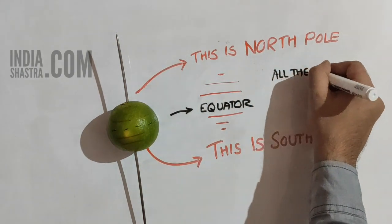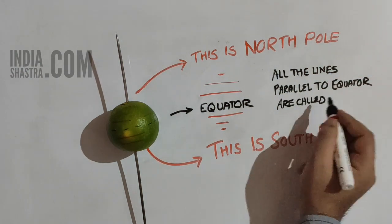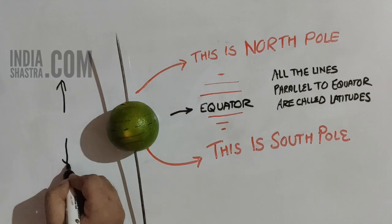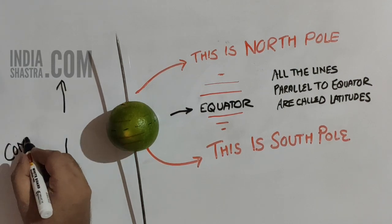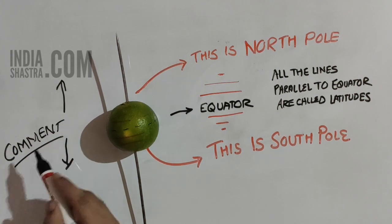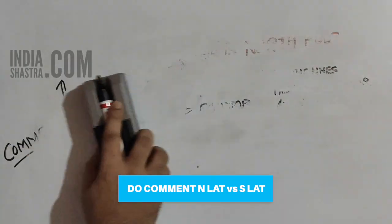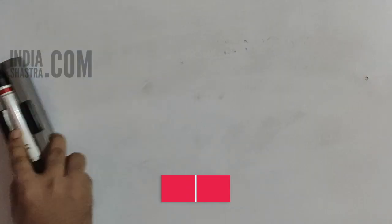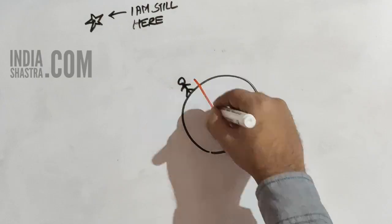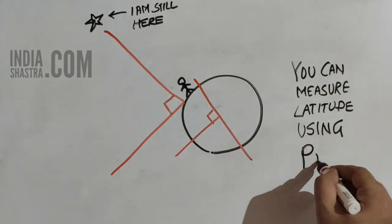Similar to the parallels of latitudes, equator represents 0 degree and poles are at 90 degree. The degrees are calculated from the center of the Earth. Now tell me, what do you mean by north latitude and south latitude? You have to comment below. Now there is an interesting thing - you can know the latitude of your place by measuring the angle of the pole star from your place.